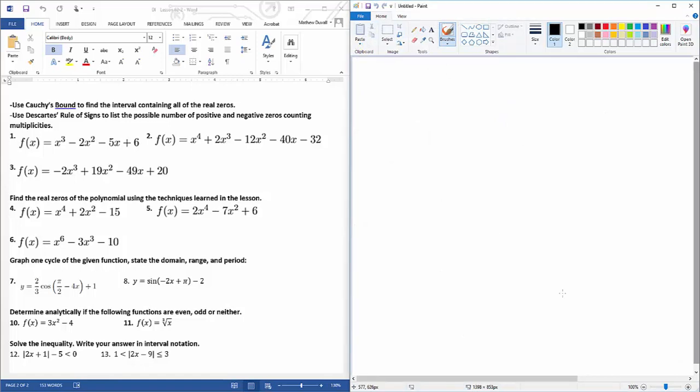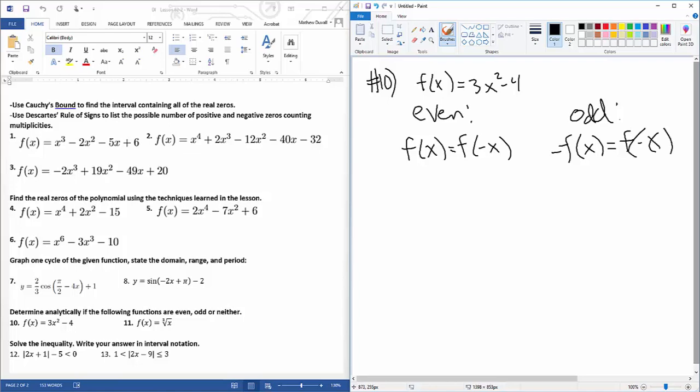Says determine the following functions if they are even or odd. So if it was even, that means f(x) equals f(negative x). Odd, negative f(x) equals f(negative x). So even, does 3x² minus 4 equal 3 times negative x squared minus 4? So 3x² minus 4 equals 3x² minus 4. Boom. So we know it's even.